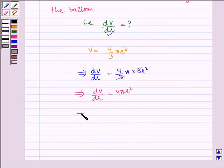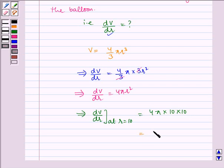Therefore, it implies dV by dr at R is equal to 10 is equal to 4 pi multiplied by 10 multiplied by 10 which is equal to 400 pi.